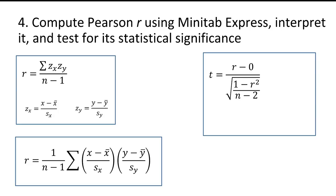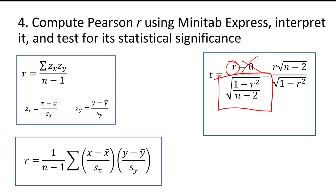Now that we know how to interpret Pearson's R and understand the basic formulas, let's go to Minitab Express to review how to compute it. I still have the cereal dataset from the LOC5 textbook open. I want to compute the correlation between the amount of sugar in a cereal and the number of calories. We've already constructed a scatterplot, so we know the relationship is linear. On a PC, go to Statistics, Correlation, Correlation. On a Mac, it's Statistics, Regression, Correlation.